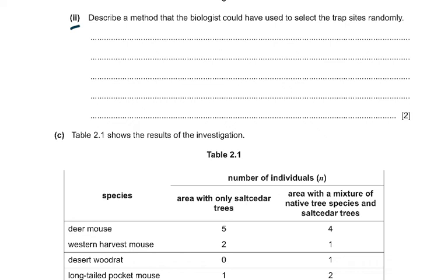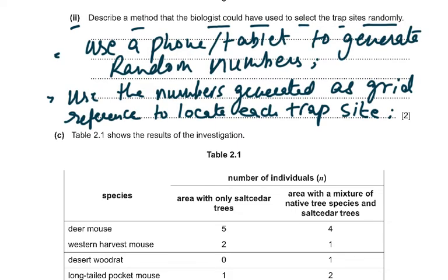Part two asks: describe a method the biologist could have used to select trap sites randomly. Use a random number generator — available on phones, tablets, or computers — to give coordinates for trap sites. Divide the whole area into a numbered grid, then use the random numbers generated as grid references to locate each trap site.